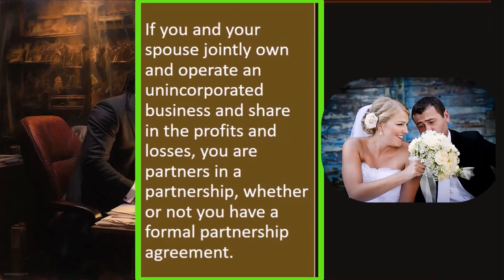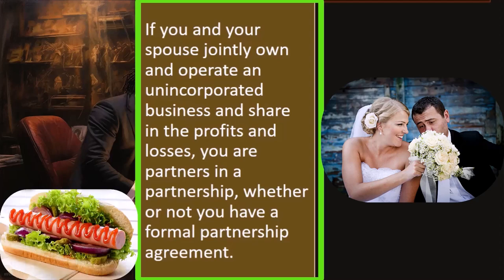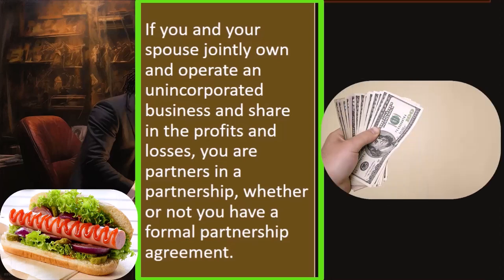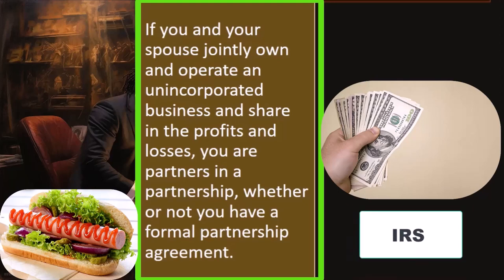So if you and your spouse jointly own and operate an unincorporated business and share in the profits and losses, you are partners in a partnership, whether or not you have a formal partnership agreement. Note that if you're a sole proprietor, the government just wants a piece of the income. You can think of it this way: if you start a hot dog stand and start making money, the IRS is going to say they want a piece of it. Even if it was illegal — even if you were selling moldy hot dogs and making people sick — the IRS would still want their piece of it. That's how they think of it for federal income tax purposes.